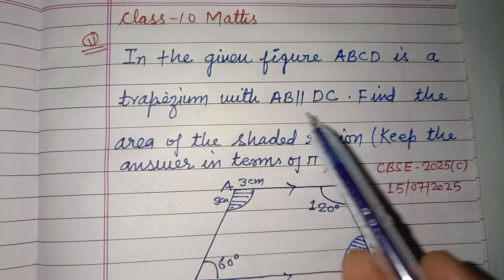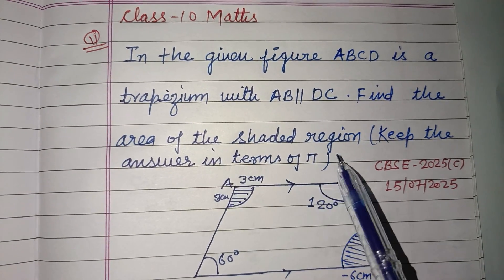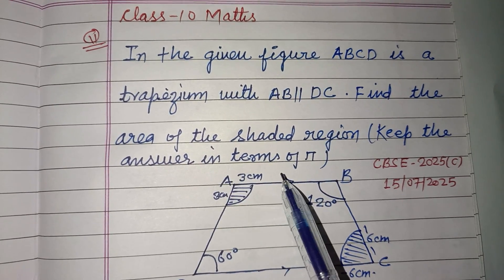In the given figure ABCD is a trapezium with AB parallel to DC. Find the area of the shaded region. Keep the answer in terms of π.